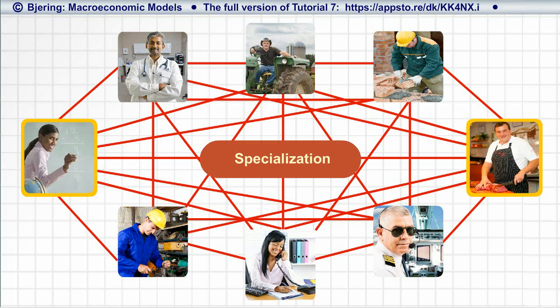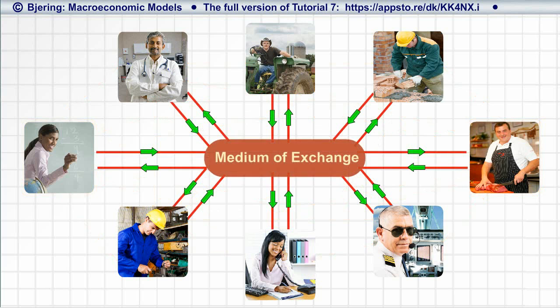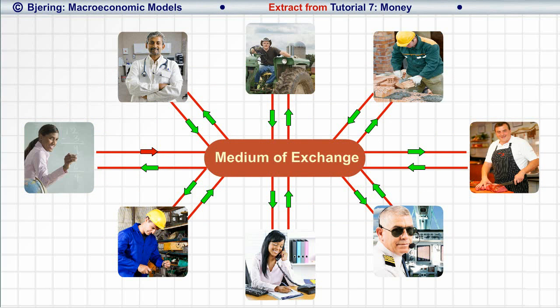The problem is solved by introducing a generally accepted medium of exchange. Now, the schoolteacher is paid in units of the medium of exchange, and she can spend buying goods and services from any of the other specialists of the economy. That medium of exchange is money.